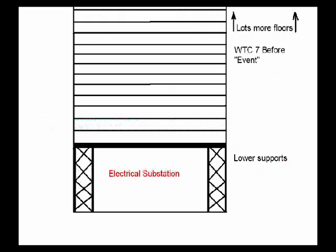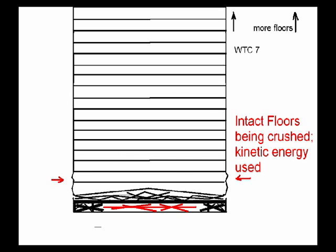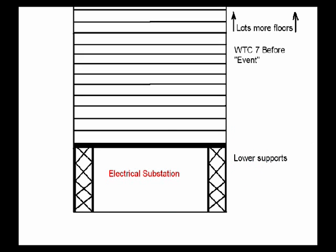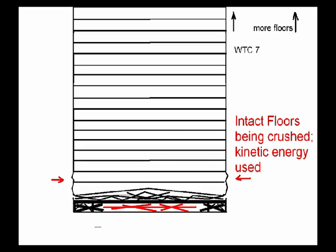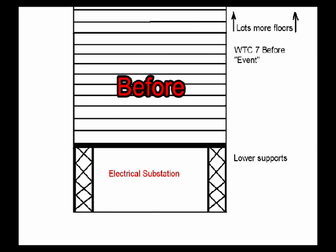The building dropped at nearly free-fall until unbroken floors hit the ground. Then the intact floors resisted being crushed by the rest of the building. If it fell freely for three seconds, that would be about 12 floors. A two-second free-fall would be about five floors.